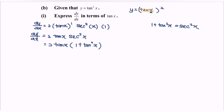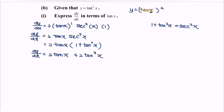Kindly expand the situation. So dy/dx equals 2 tangent x plus 2 tangent cubed x. That is the dy/dx expressed in terms of tangent x.